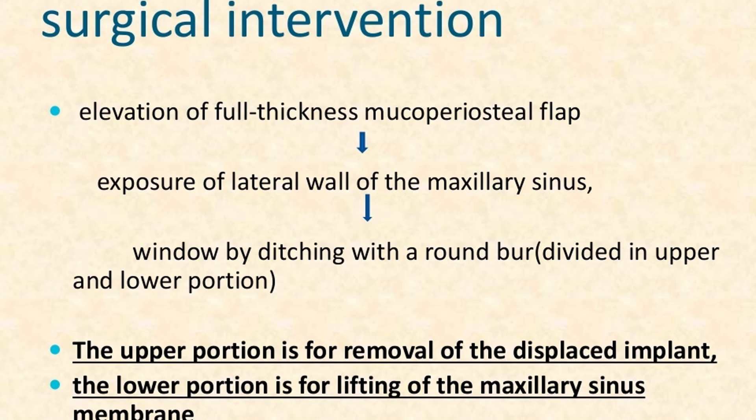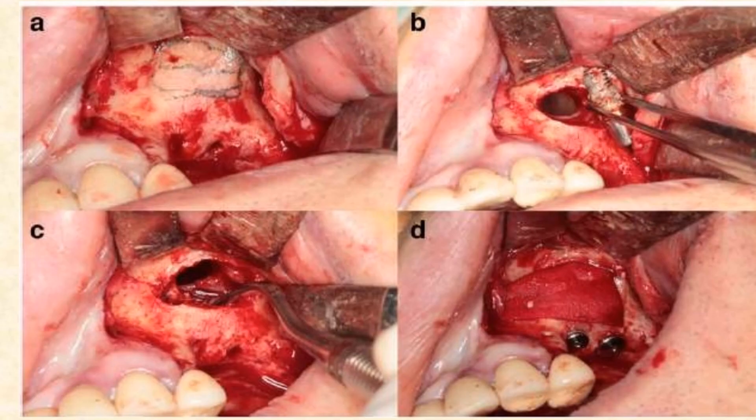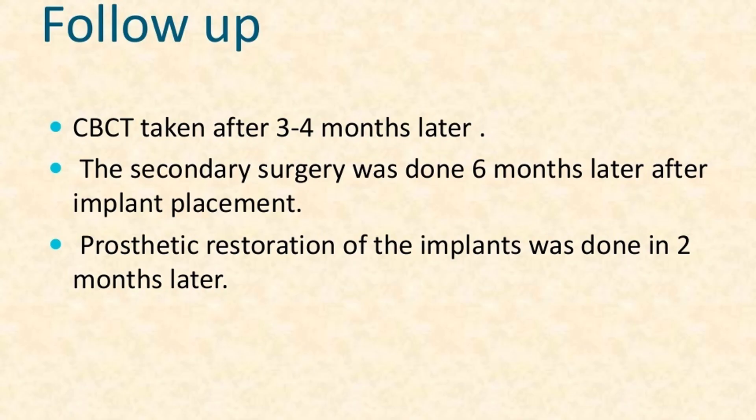Surgical intervention options include the Caldwell-Luc procedure and conservative observation in the absence of signs or symptoms. The surgical technique involves elevation of a full-thickness mucoperiosteal flap, exposure of the lateral wall of the maxillary sinus, and creation of a window by ditching with a round burr. The window is divided into upper and lower portions: the upper for removal of the displaced implant, and the lower for lifting the maxillary sinus membrane.